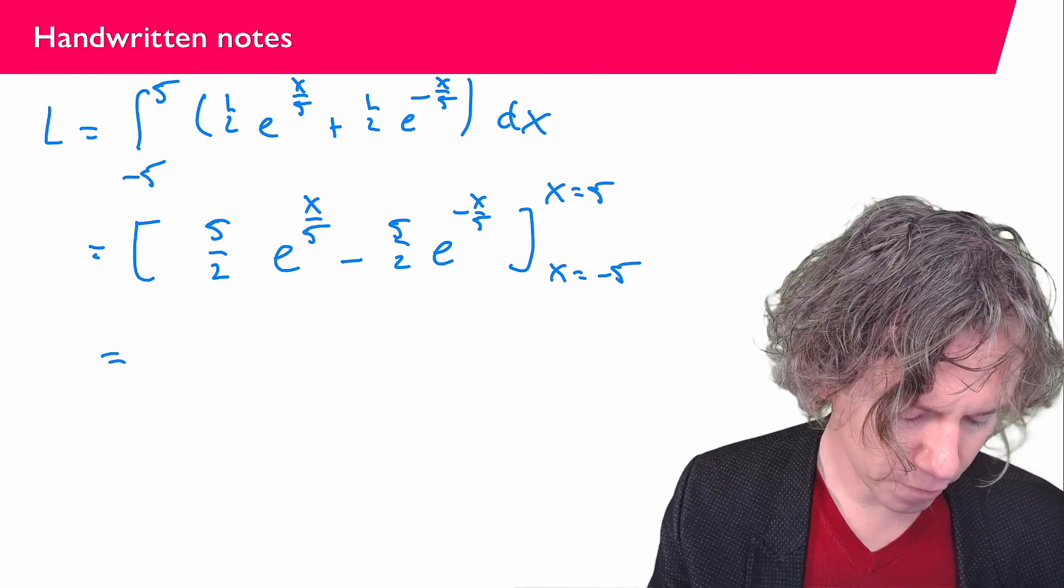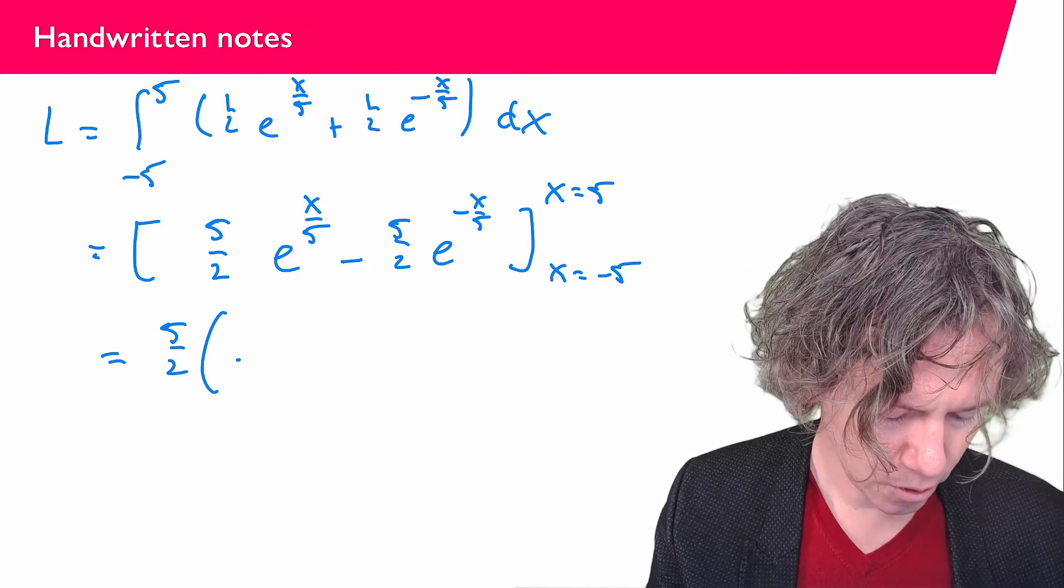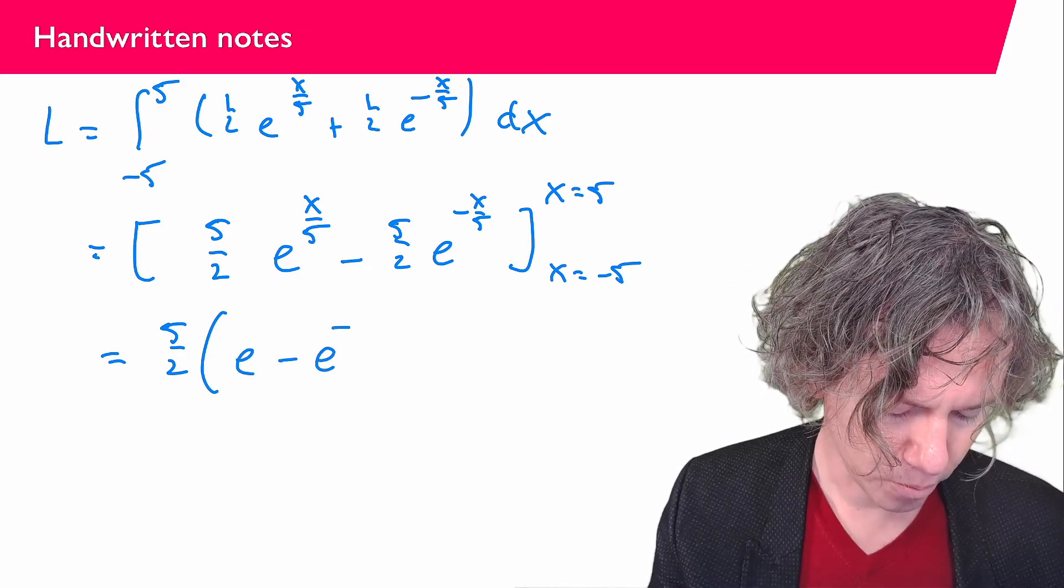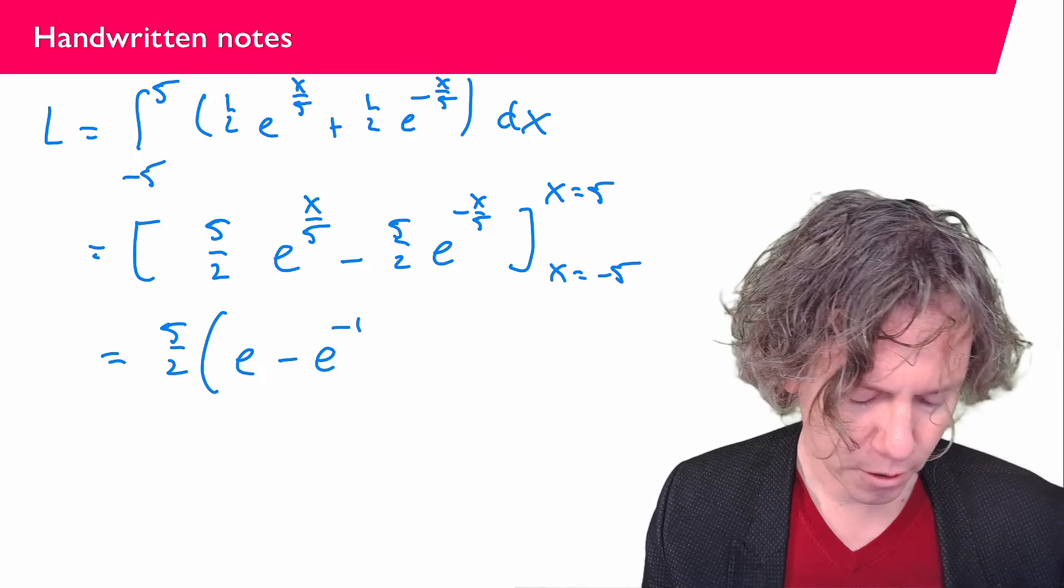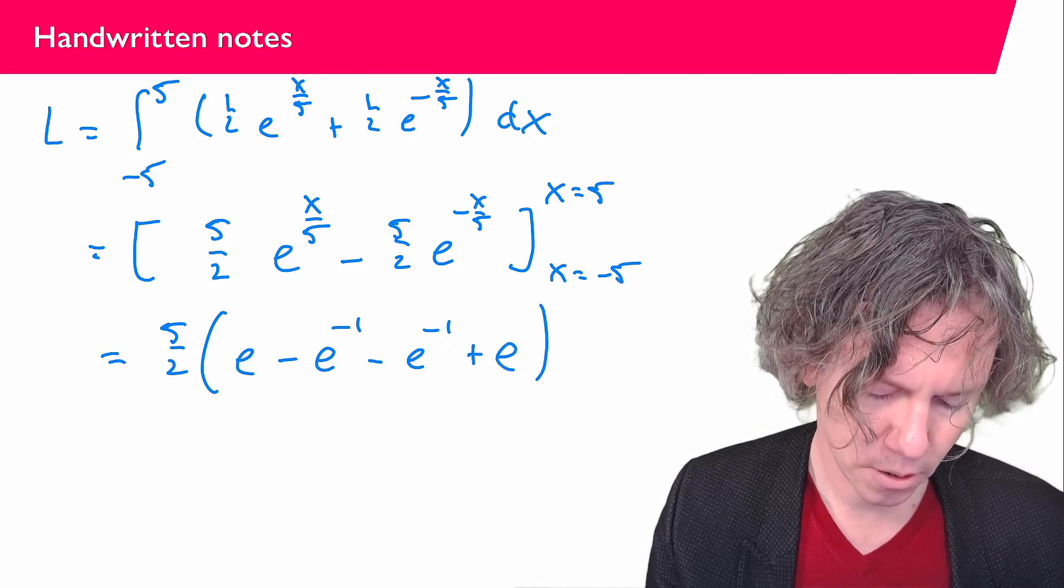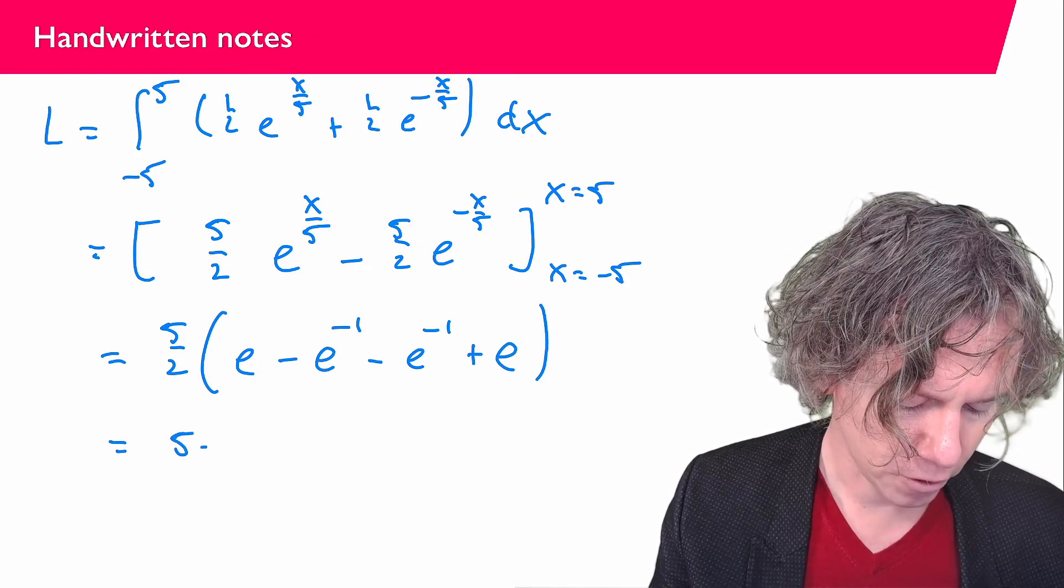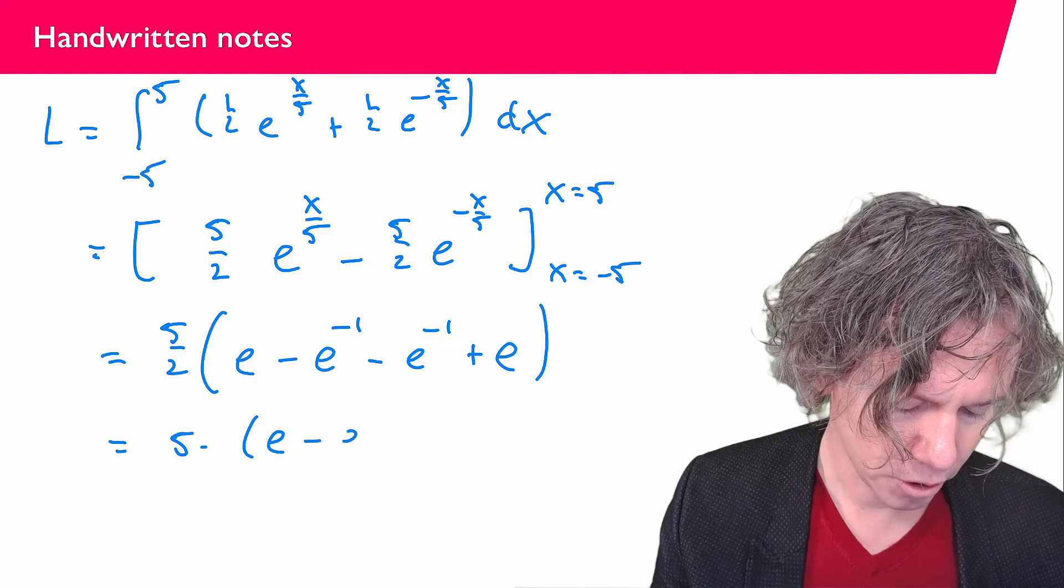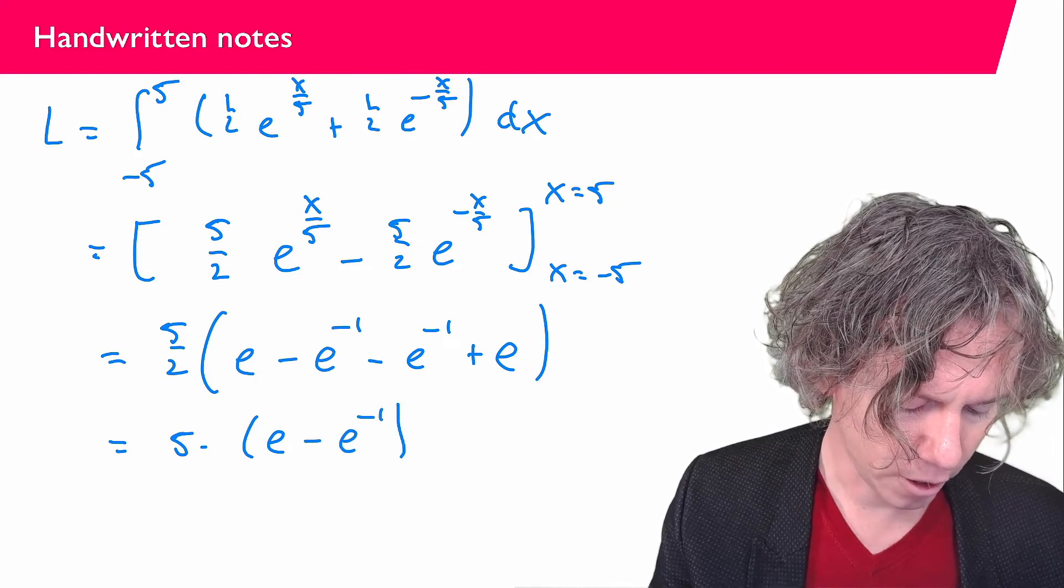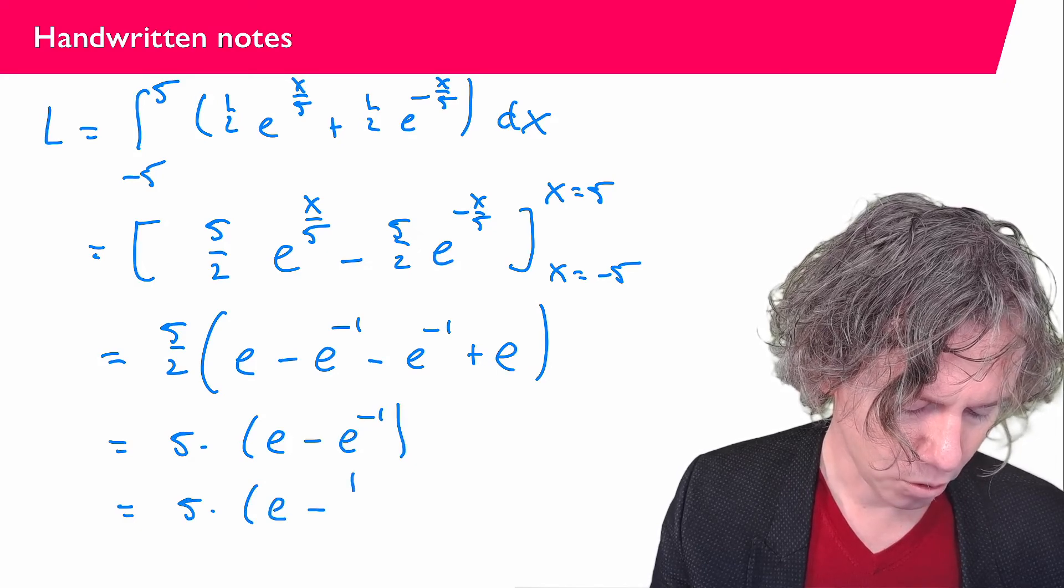So what we get is 5 over 2 times e minus e to the power minus 1, and then we get minus e to the power minus 1 plus e. We can write this whole thing together as 5 times e minus e to the power minus 1, and if you like you can write that as e minus 1 over e.